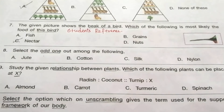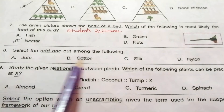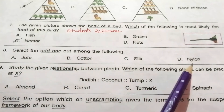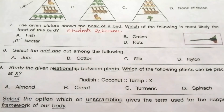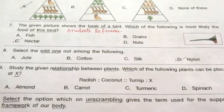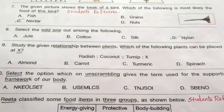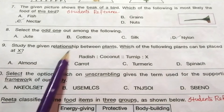Question 8: Select the odd one out among the following — jute, cotton, silk, nylon. The correct answer is D, nylon. Nylon is a man-made fiber; the other three are natural fibers.